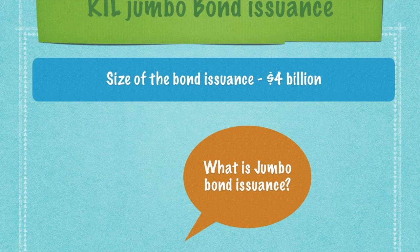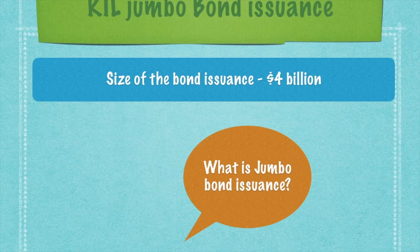A jumbo bond issuance is, in financial market lingo, any bond issuance of a value more than 1,000 million dollars — that's a billion dollars — and is considered to be a jumbo bond issue. If it is less than 100 million, it's considered to be a mini bond issue. As explained in New York bond markets, jumbo bonds and jumbo equities are those which exceed a billion dollars in terms of issue size.